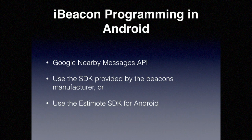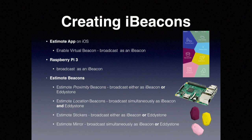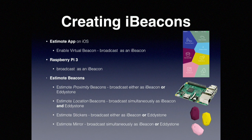In Android, there are many ways to look for beacons. You can use the Google Nearby Messages API, or if you're using beacons from specific providers, they have their own SDK. In general, you can use the Estimote SDK for Android. For developers, the cheapest way to create beacons for development is not buying beacons — download the Estimote app on iOS and you can configure your phone to act as a beacon.